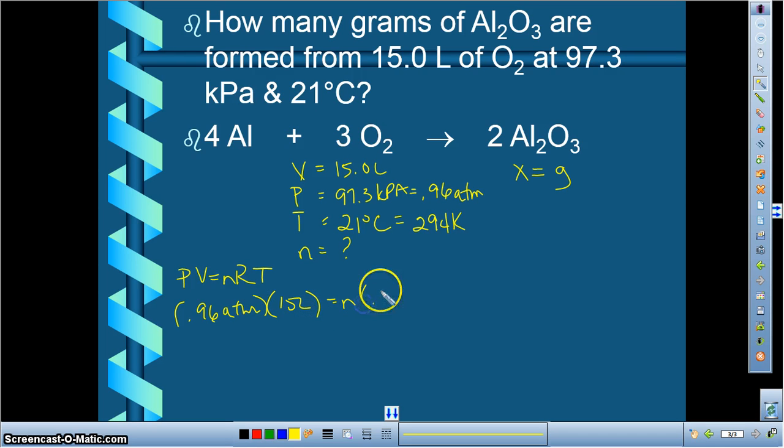Number of moles times R, which is 0.08206, and that would be able to cancel with liters, atmospheres, and Kelvin. And our temperature in Kelvin is 294 Kelvin. So once we do the simple algebra, we're going to multiply both sides and then divide by what n is multiplied by and get our final answer. And if I've done the math correctly, we should end up with 0.597 moles of O2.